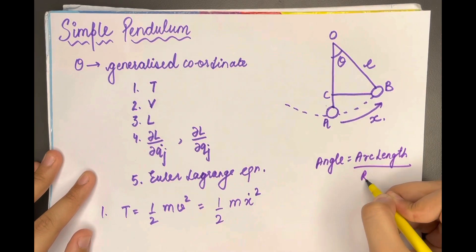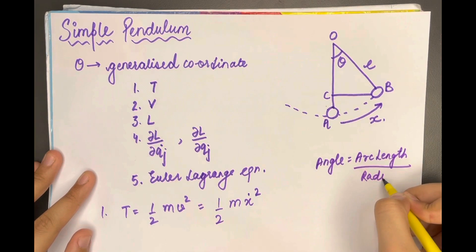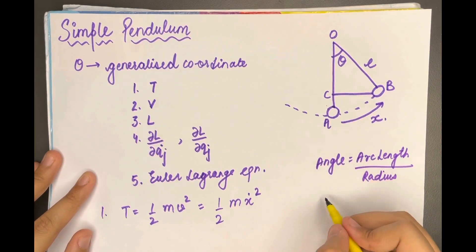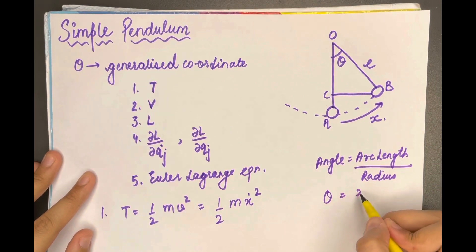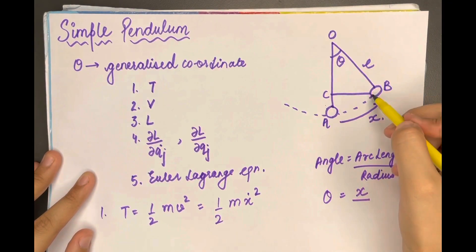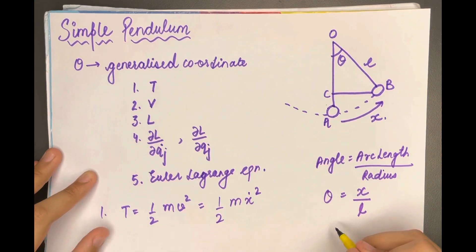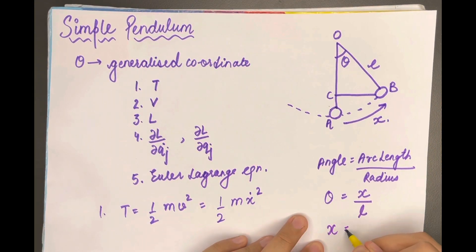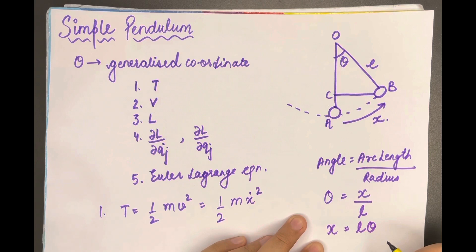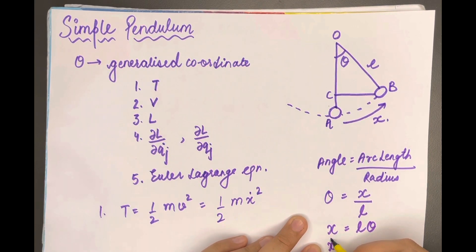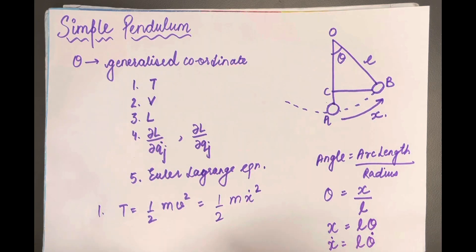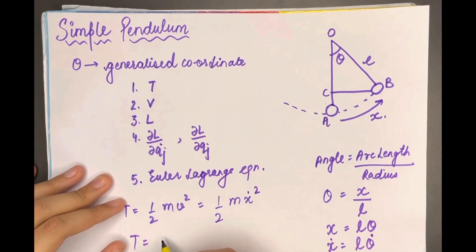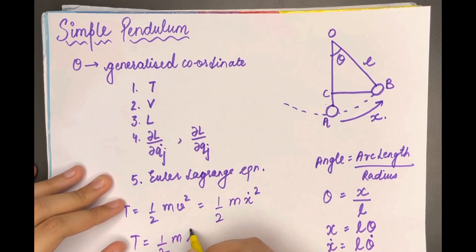Our angle here is θ, our arc length is denoted by x, and our radius is l. So arc length x equals l·θ, which means ẋ equals l·θ̇. Substituting, kinetic energy T equals ½ml²θ̇². That completes our first step.